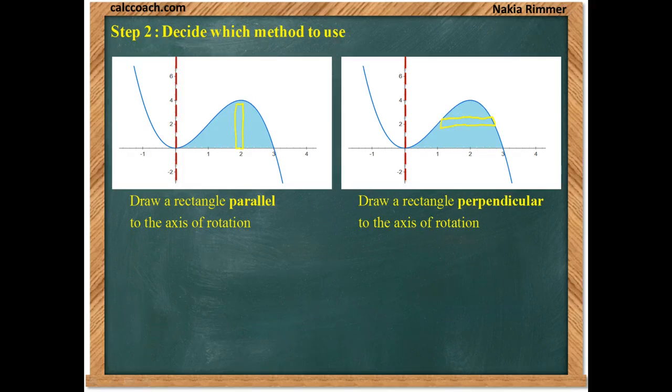The one that's parallel to the axis of rotation is the shell method. The one that's perpendicular to the axis of rotation is either disk or washer, and it's based on the fact of whether or not there's a gap between the axis and your region. And so, in this case, it's going to be a washer because there's this defined gap between your axis and your region.